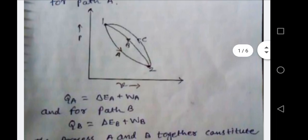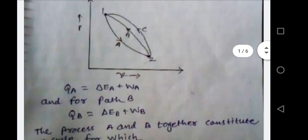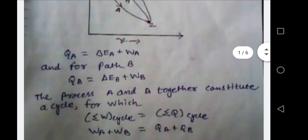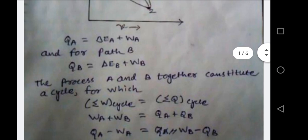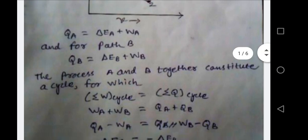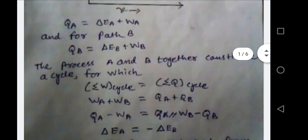QA equals delta EA plus WA, and QB equals delta EB plus WB. Applying the rule sigma W cycle equals sigma Q cycle (J considered as 1), we get WA plus WB equals QA plus QB. Rearranging, QA minus WA equals WB minus QB, which gives delta EA equals minus delta EB, because Q minus W equals delta E.